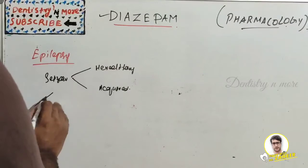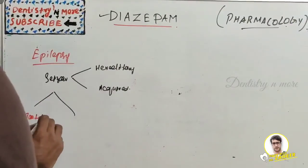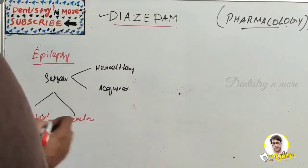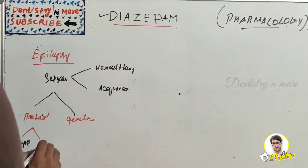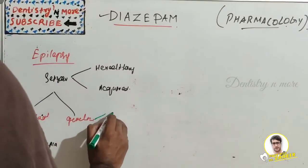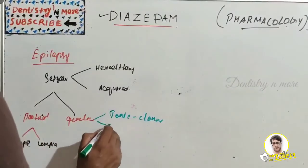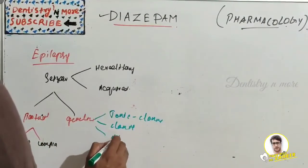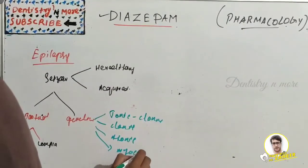There are two main classifications for seizures: partial and generalized. Partial seizures can be further divided into simple and complex. Generalized seizures include tonic-clonic seizures, clonic seizures, atonic seizures, and myoclonic seizures.